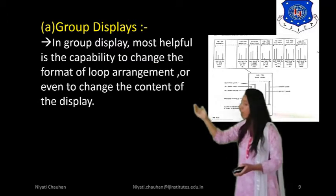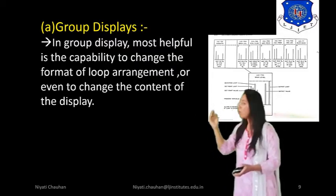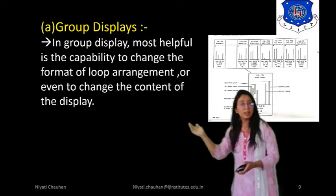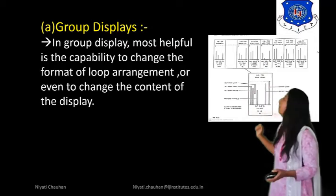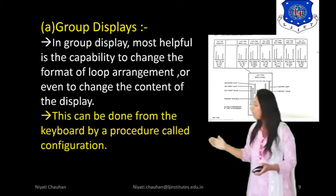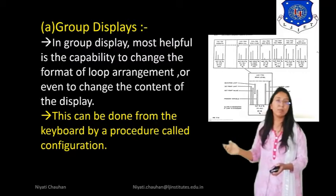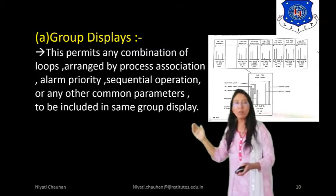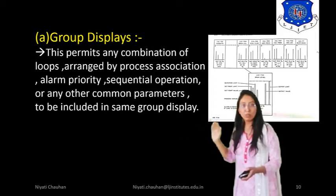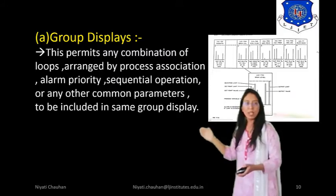In the group display, the most helpful feature is the capability to change the format of loop arrangement or even to change the content of the display. This can be done from the keyboard by a procedure called configuration. This permits any combination of loops arranged by process association, alarm priority, sequential operation, or any other common parameters to be included in the same group display.